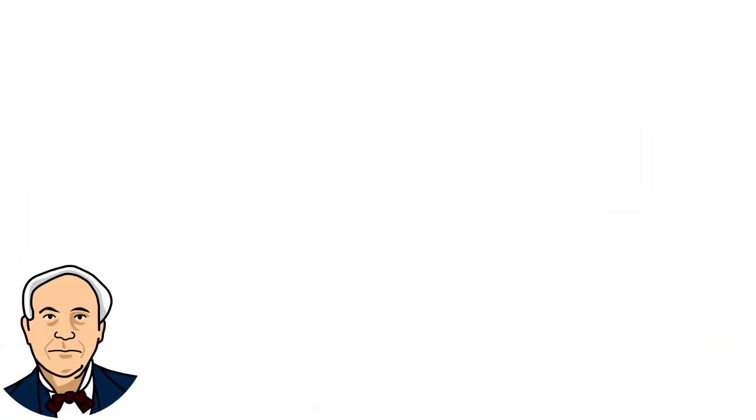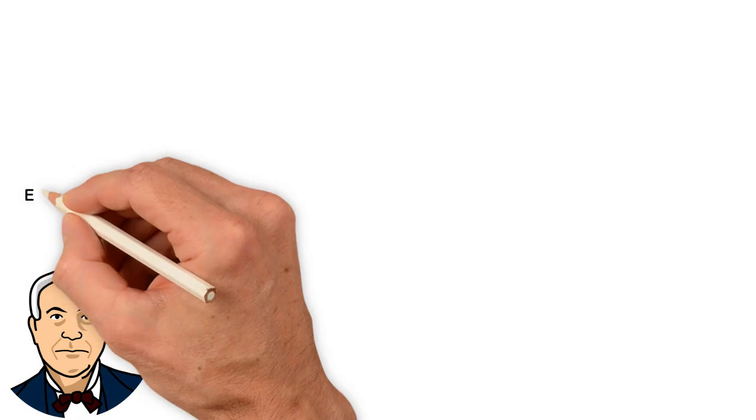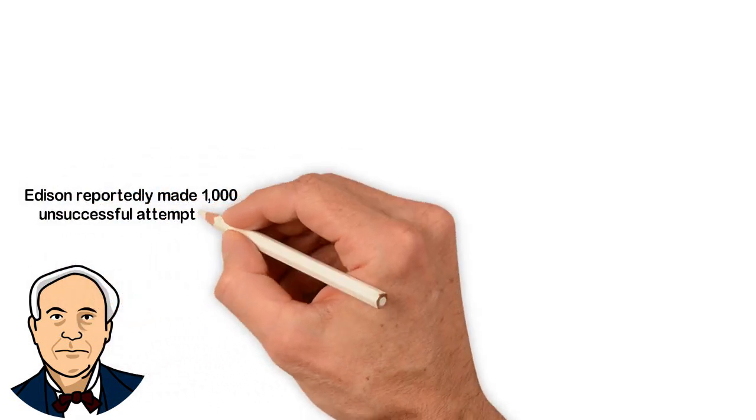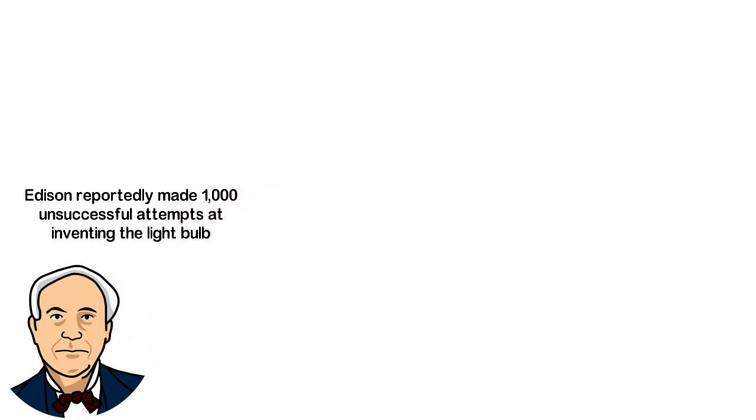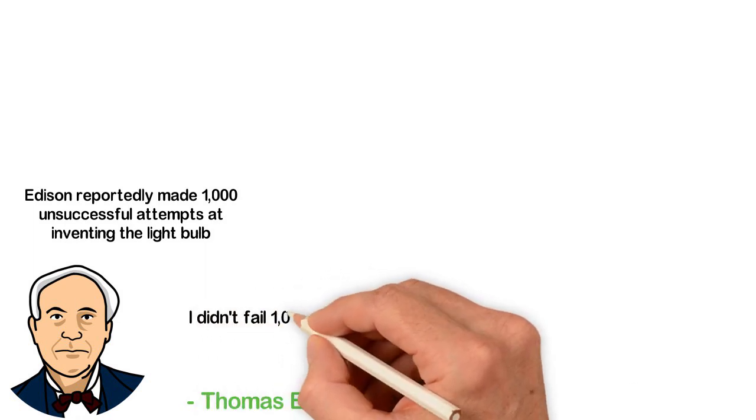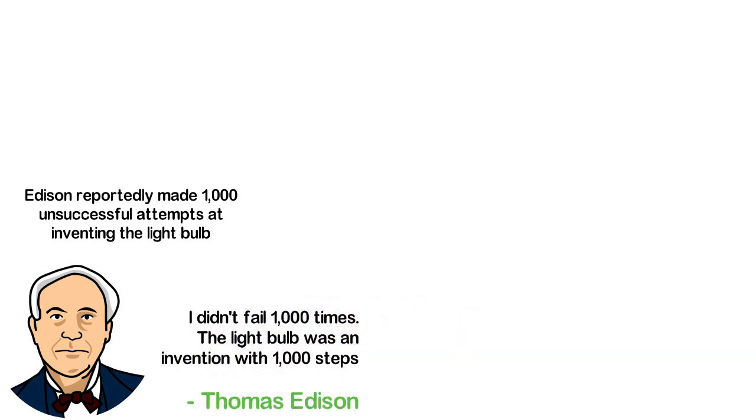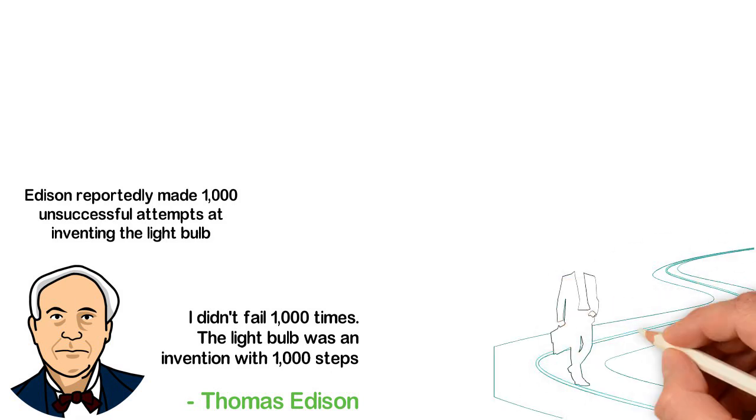Thomas Edison was a great entrepreneur and inventor. As an inventor, Edison reportedly made 1000 unsuccessful attempts at inventing the light bulb. When a reporter asked, how did he fail to fail 1000 times? Edison replied, I didn't fail 1000 times. The light bulb was an invention with 1000 steps. To be rich and successful, you have to embrace failures. You have to see failures as necessary steps to success.